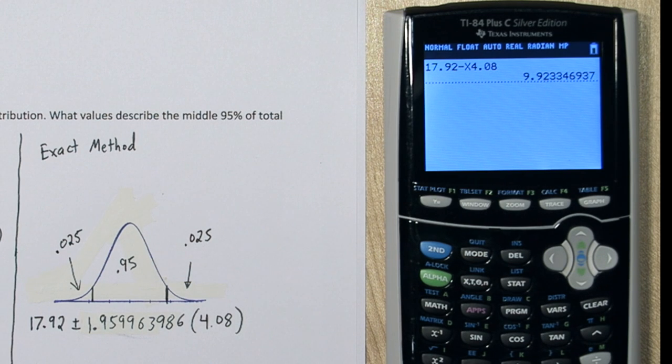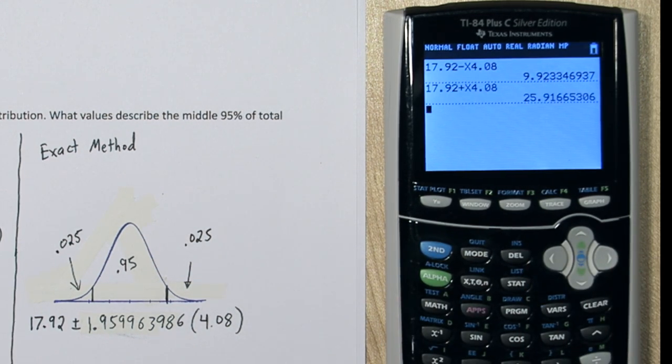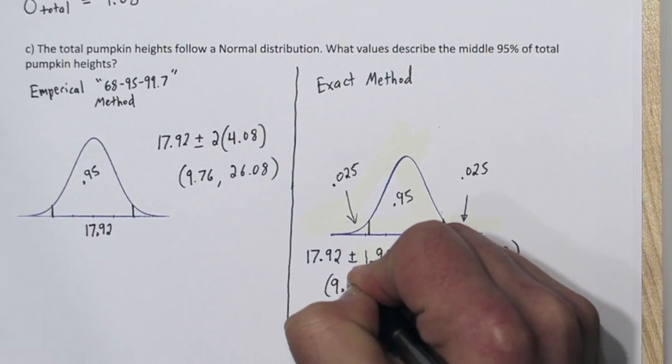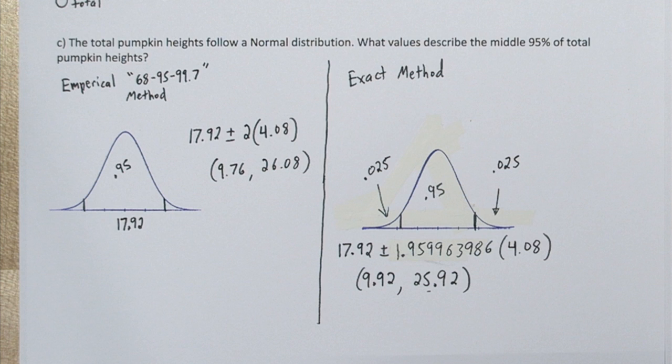There's my lower limit. And I'll get my upper limit by changing this to an addition sign. There we go. So you can see these intervals are a little bit different. But this one's more exact.